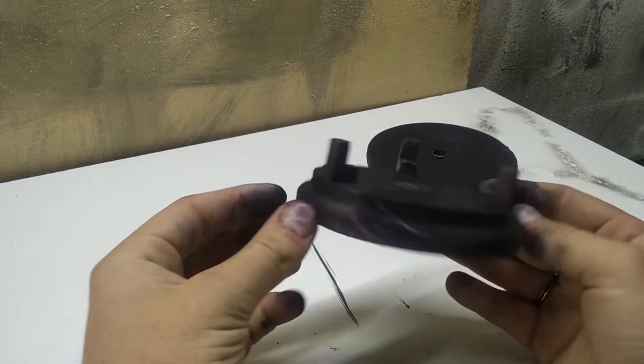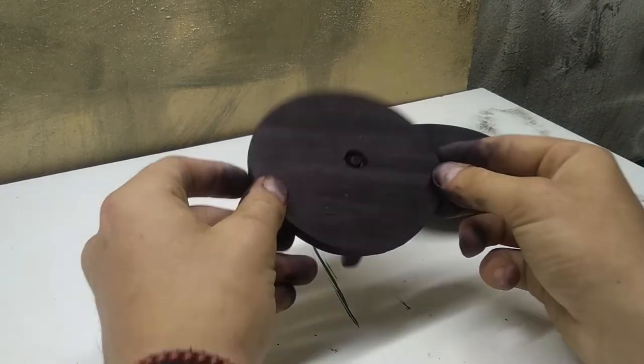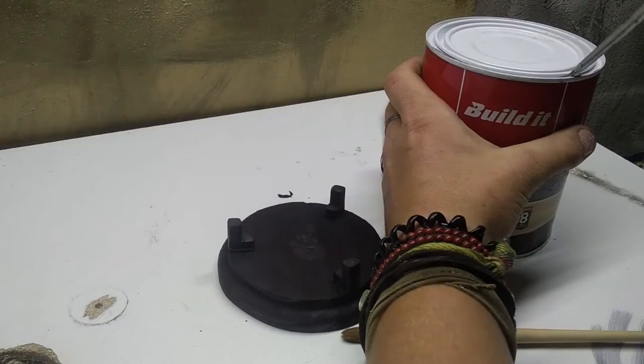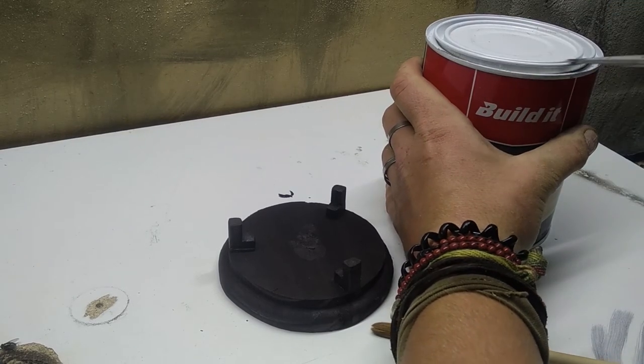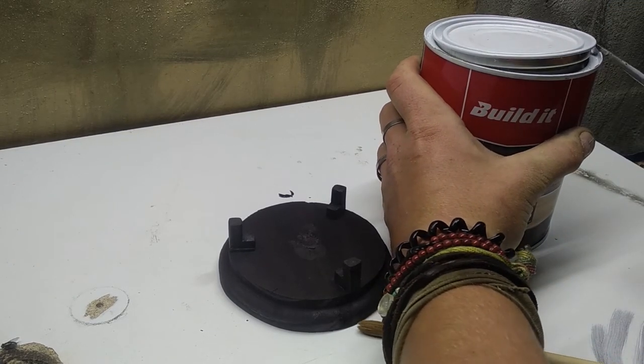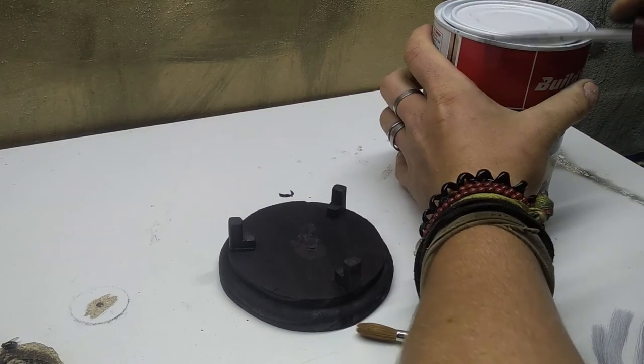Once we were sure that the stain had dried nicely and we had put our second coat on, it was time for varnishing. Here again, we kept it nice and simple. We just used clear varnish and the clear varnish is just going to bring out a really nice shine on the wood and basically deepen the black.